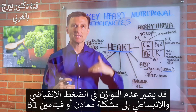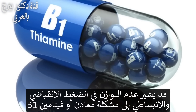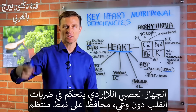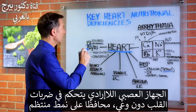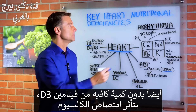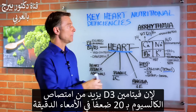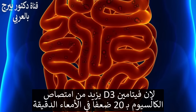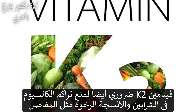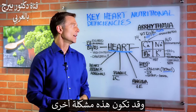If you have an imbalance in the systolic and diastolic, it could be a problem with minerals or with vitamin B1, because the autonomic nervous system regulates the heartbeat unconsciously. So it could be a B1 deficiency or a calcium problem. Also, if you don't have enough vitamin D3, you don't get enough calcium absorption — vitamin D3 increases calcium absorption by 20 times in the small intestine. Vitamin K2 is very important in making sure you don't build up too much calcium in the arteries or soft tissues. The acid level in your stomach also controls mineral absorption.